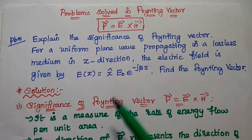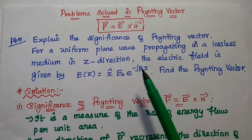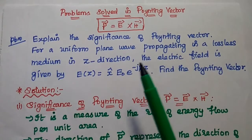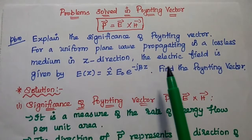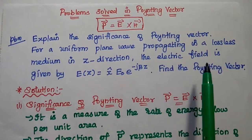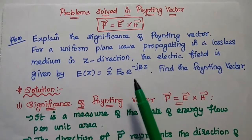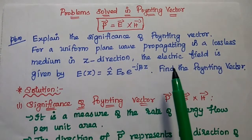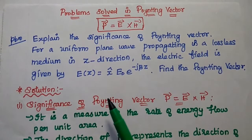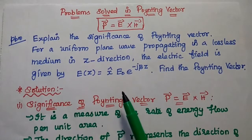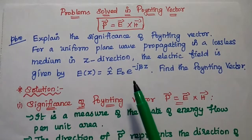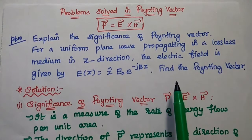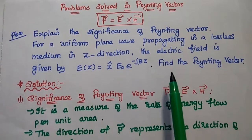The first problem: explain the significance of the Poynting vector for a uniform plane wave propagating in a lossless medium in the z-direction. The electric field is given as E(z) = x̂ · E₀ · e^(−jβz). Find the Poynting vector.